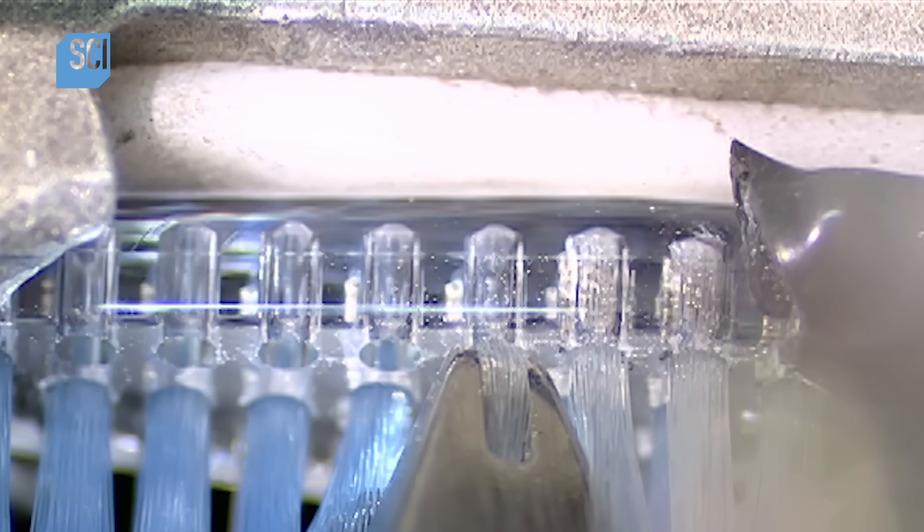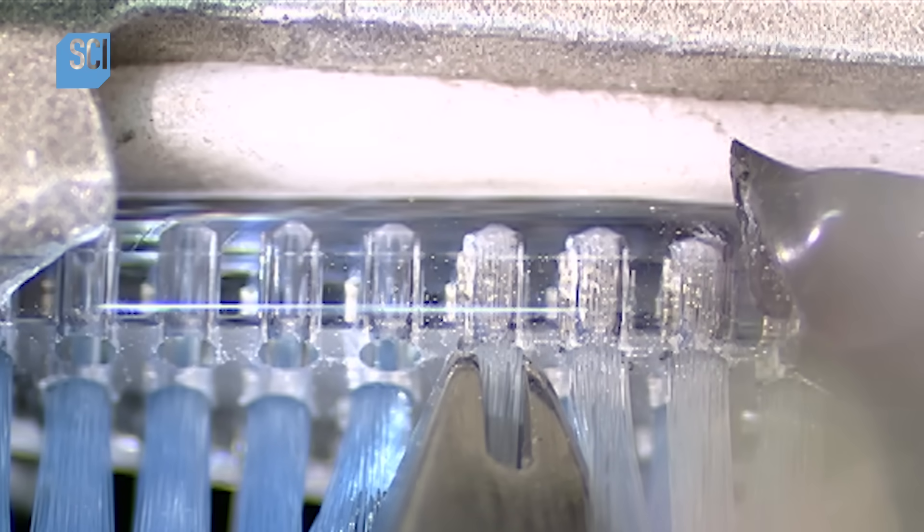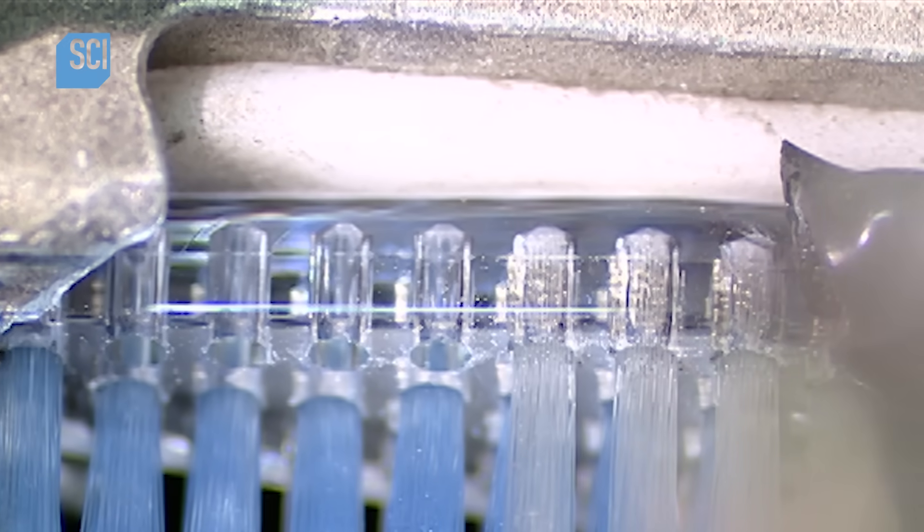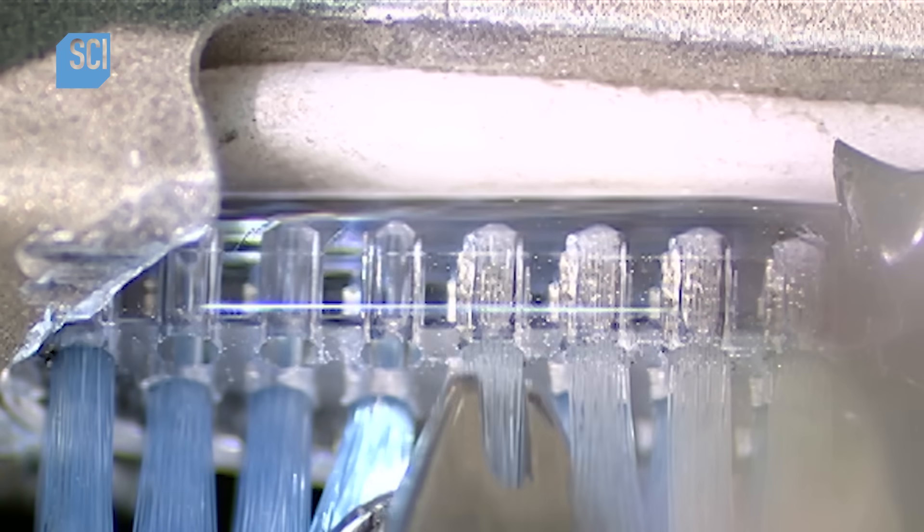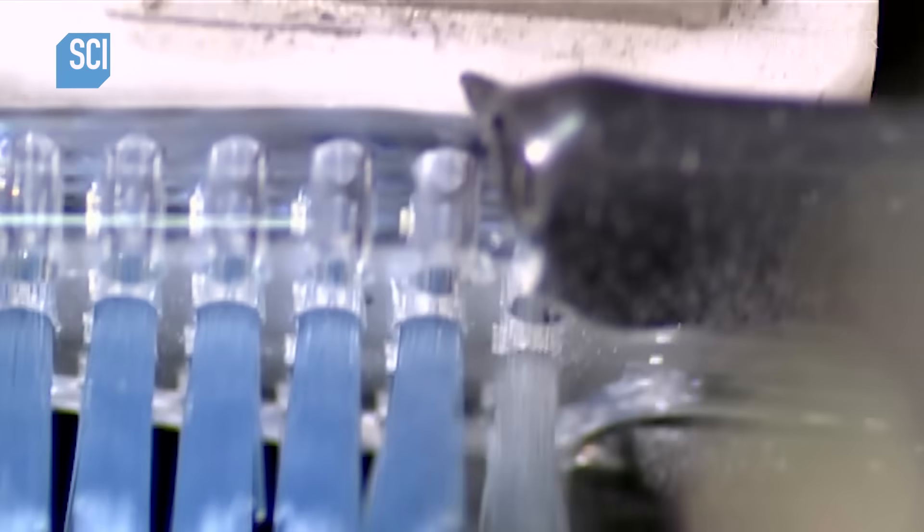You may have noticed that some bristles are white and others are blue or another color. This is purely aesthetic, a nifty color combination to make the toothbrush look smarter. And of course, the machine knows exactly which color goes where, so you end up with a two-tone brush like this one.